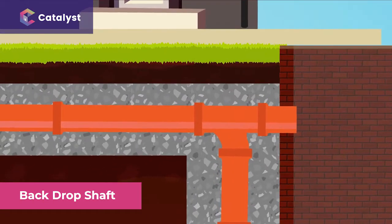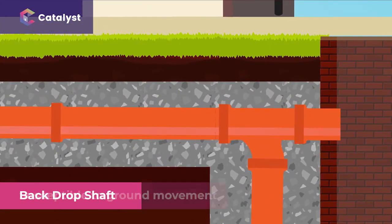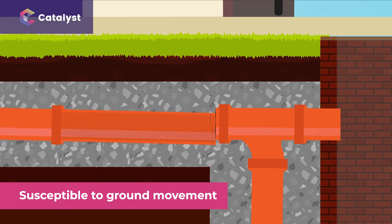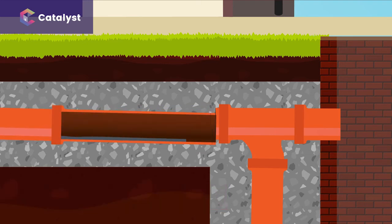Drop shafts are near vertical pipes. Because of this, they are susceptible to ground movement, resulting in the pipe becoming fractured. These faults are most commonly found just before the point where the pipe drops into the manhole. This is the point of greatest structural stress.